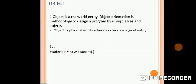We can have as many objects of the Student class as we want. For example, if we want another object of the class we can write: Student st1 = new Student(). Now 'st' and 'st1' are the instances of the class Student, that is, the objects of the class Student.